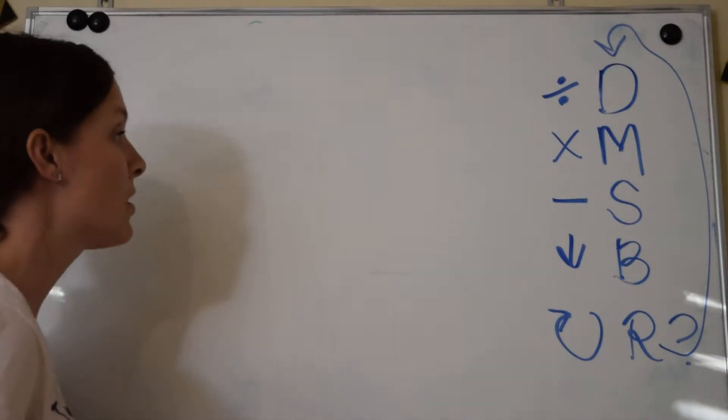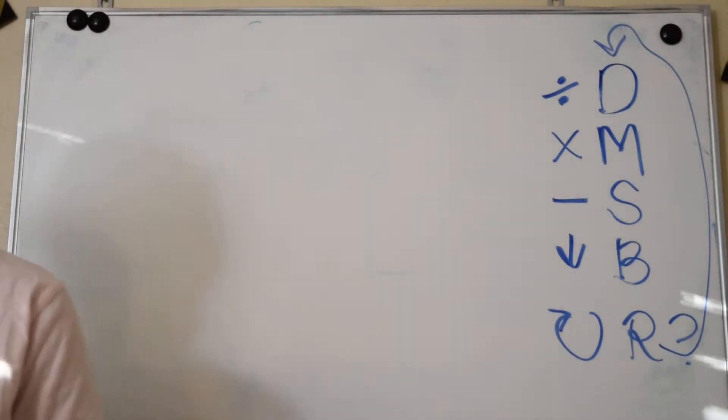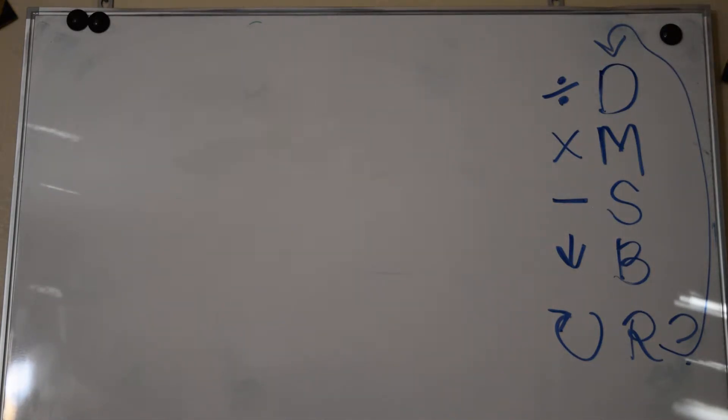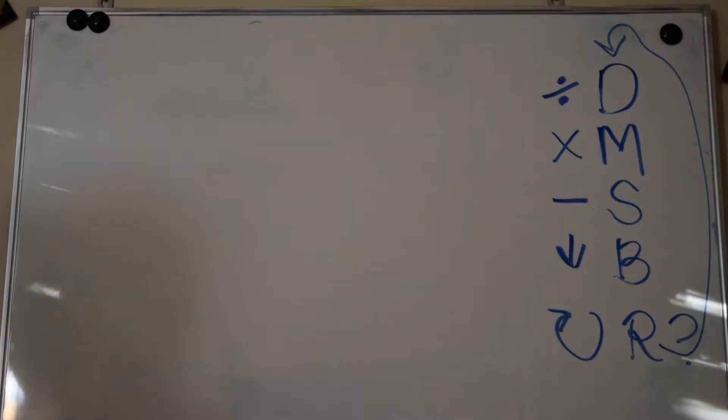It does get a little bit trickier and longer when we work with bigger numbers. So let's go ahead and do an example. It's going to be a bigger one: 852 divided by 4.